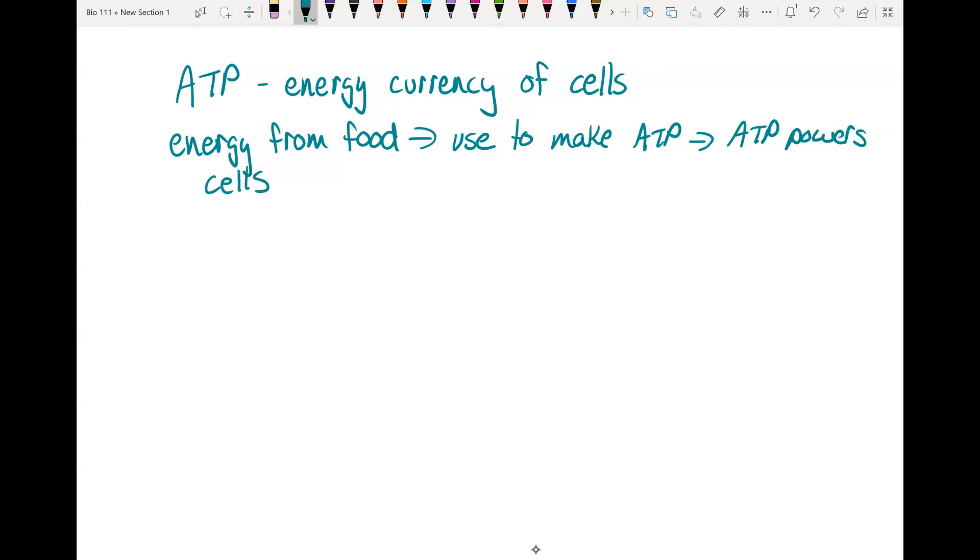The food energy is converted into ATP energy, and then ATP powers the processes in your cells. ATP is adenosine triphosphate, so it has three phosphates. This last one has a high energy bond.